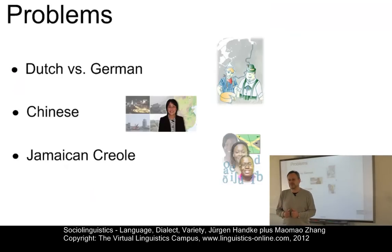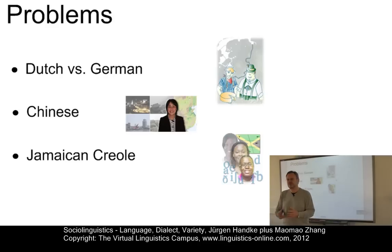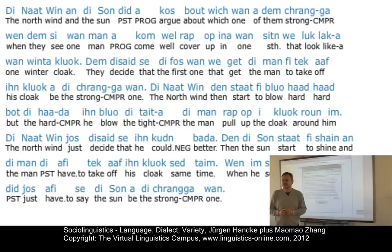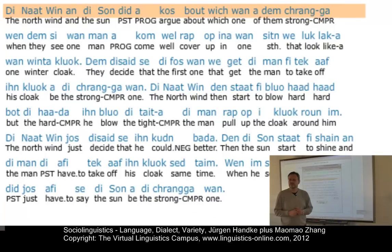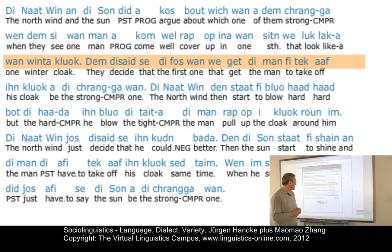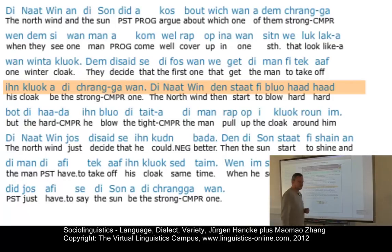The Chinese problem tells us quite clearly that we must distinguish between phonology and orthography. The next problem concerns a language often classified as a variety of English. But is it really? Do all native speakers of English understand the following text in Jamaican Creole? Obviously there are problems with the concept of mutual intelligibility.